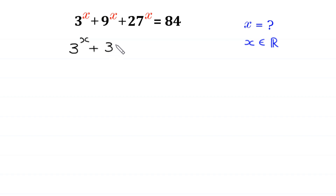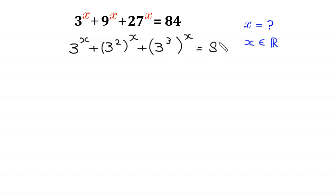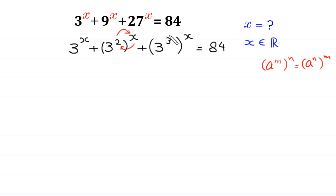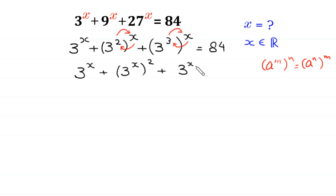We start by rewriting: 9 to the power x as 3 squared, whole to the power x, and 27 to the power x as 3 cubed, whole to the power x. By using the power rule — a to the power m, whole to the power n, equals a to the power mn — we get 3 to the power x plus 3 to the power x, whole to the power 2, plus 3 to the power x, whole to the power 3, is equal to 84.